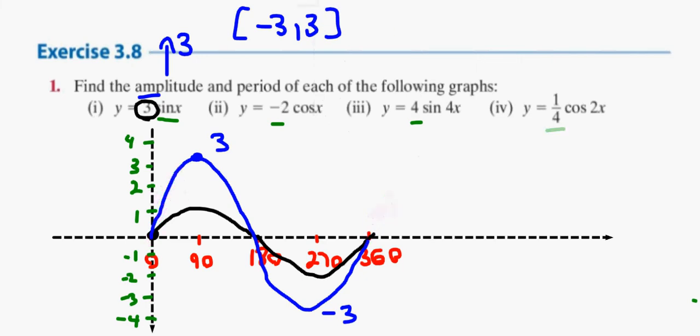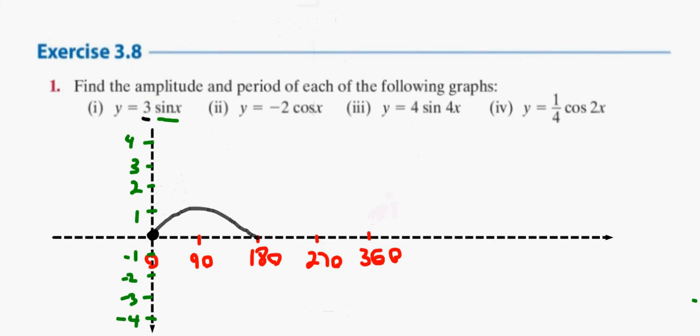So essentially, what you need to know is, anytime it's just X on its own, when it's just X on its own, the period is 360 degrees. The amplitude is what comes in front of it. So what do we reckon? Amplitude of 3, period of 360, alright.